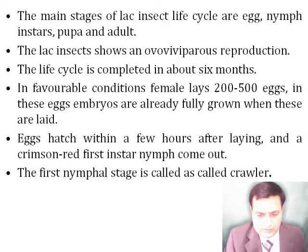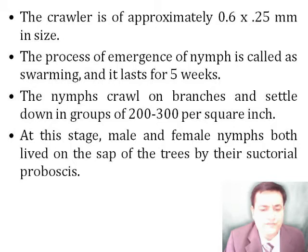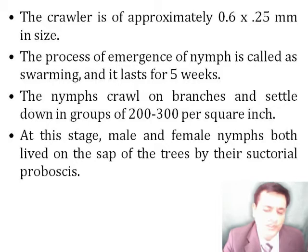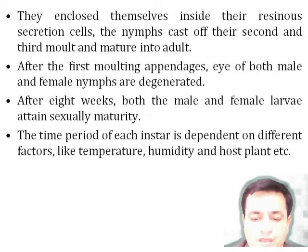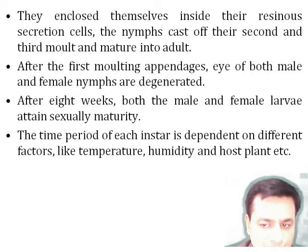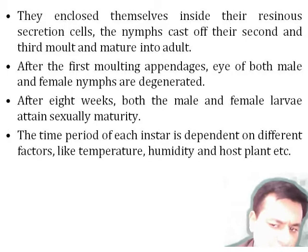The first nymph is called a crawler. The process of emergence of nymphs is called swarming, which lasts for five weeks. The nymphs crawl onto various branches of their host trees and settle at 200 to 300 per inch. At this stage, male and female nymphs both feed on the sap of the plants using their piercing and sucking mouthparts. The nymphs moult three times. They enclose themselves in a resinous secretion cell, and after the first moulting, appendages and eyes of both male and female nymphs are degenerated. After approximately eight weeks, male and female larvae attain sexual maturity.